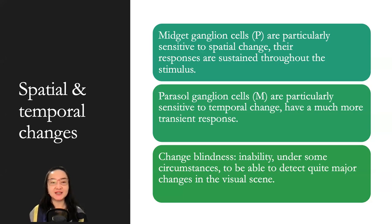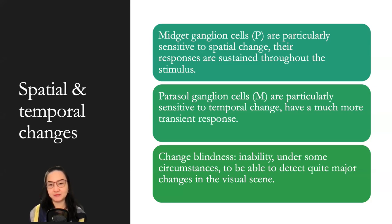Spatial and temporal changes. Midget ganglion cells, or P cells, are particularly sensitive to spatial change; their responses are sustained throughout the stimulus. Parasol ganglion cells, or M cells, are particularly sensitive to temporal change and have a much more transient response. Change blindness is the inability, under some circumstances, to detect quite major changes in the visual scene.